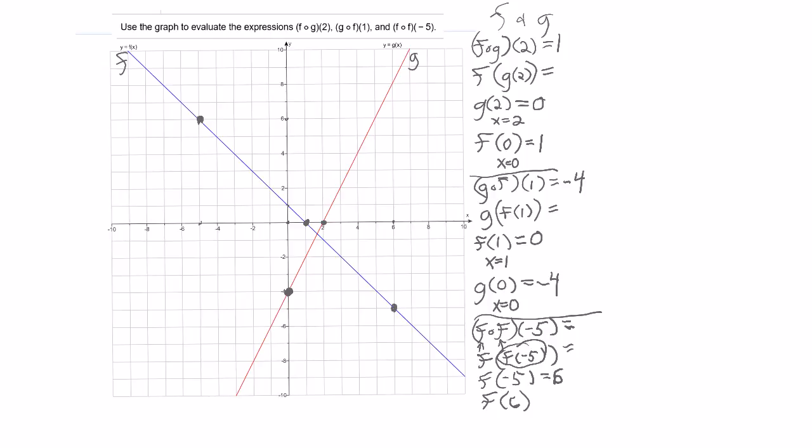and I find what the y-coordinate is there at x equals 6 for the blue line, and it is negative 5. So f of 6 equals negative 5.